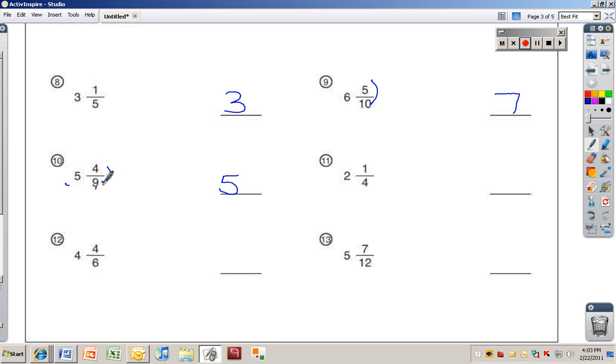2 and a fourth. 2 or 3? 2. 2. A fourth is smaller than a half. 4 and 4 sixths, 4 or 5? 5. 5, right? Because 3 sixths is a half. 5 and 7 twelfths? 6. 6. I'm going to round that up, because 6 twelfths is a half. That's 7 twelfths, so we've got to go up to the next whole number.